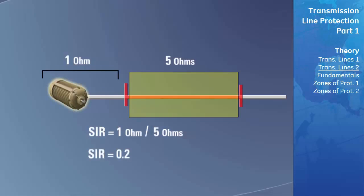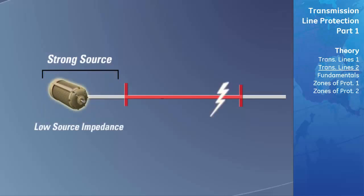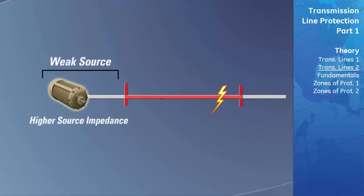If the system behind the transmission line has a strong source, the source impedance will be low. In this configuration, if a fault occurs, the fault current will be very high and the voltage will tend to remain stable. If the system has a weak source, the source impedance will be higher, the fault current will be lower in magnitude, and the line voltage will tend to drop. The system impedance ratio is therefore a very important factor in the stability of a power system.